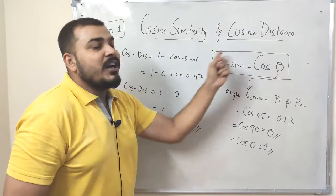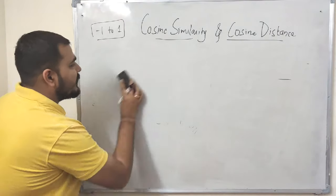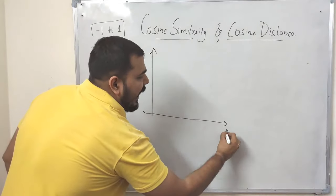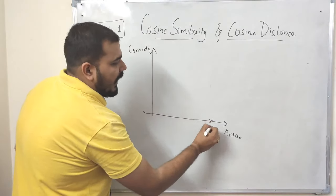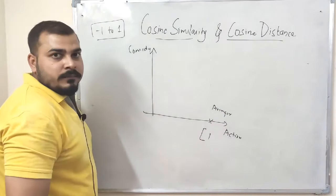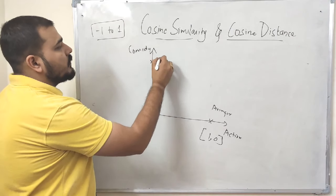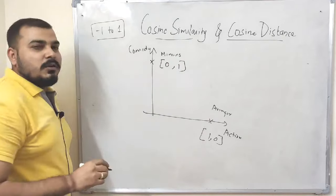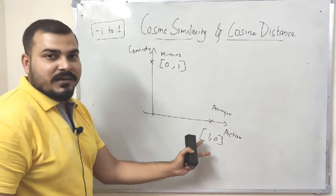Now let me show how this technique is used in recommendation systems. Suppose I have a movie recommendation system with two features: action and comedy. For the movie Avengers — an action movie — the action parameter is 1 and comedy is 0. For Minions — a comedy movie — action is 0 and comedy is 1. These are two-dimensional vectors.